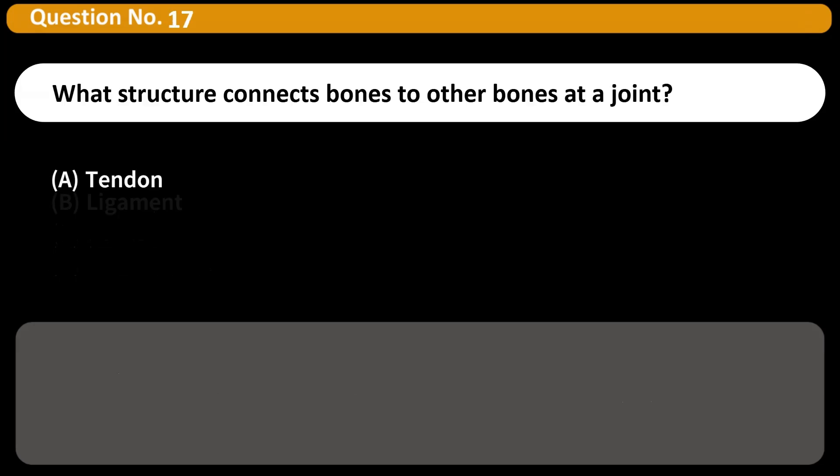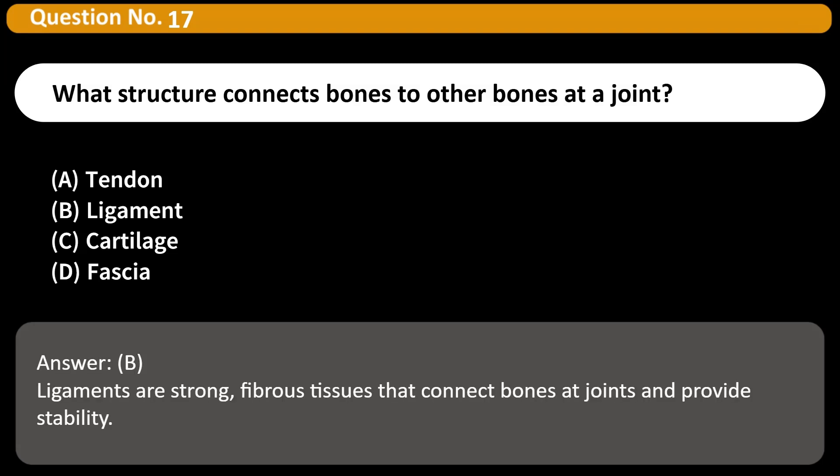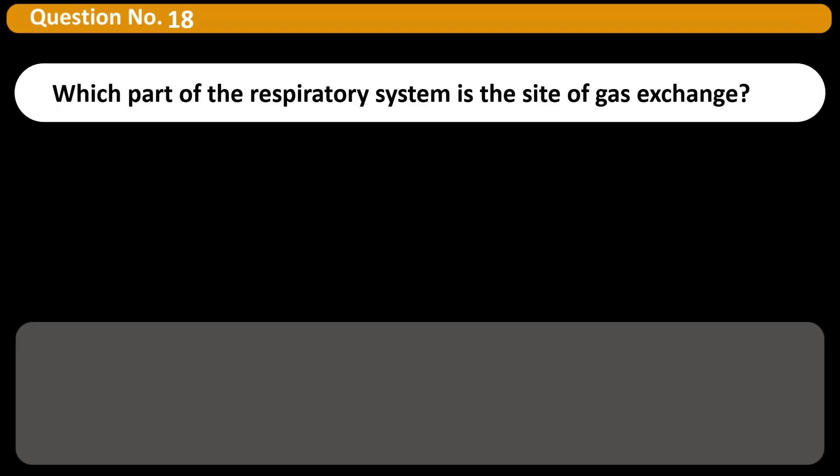What structure connects bones to other bones at a joint? A) Tendon, B) Ligament, C) Cartilage, D) Fascia. Answer: B. Ligaments are strong fibrous tissues that connect bones at joints and provide stability.